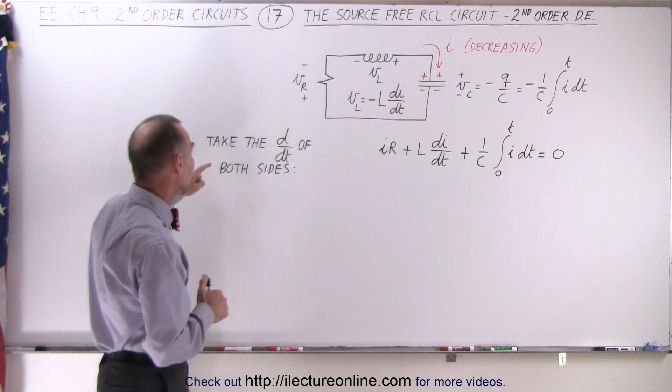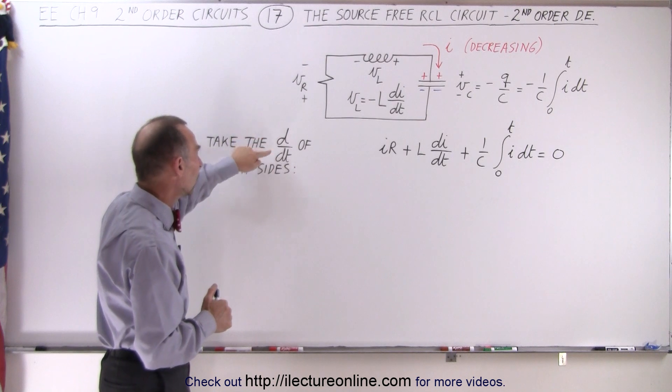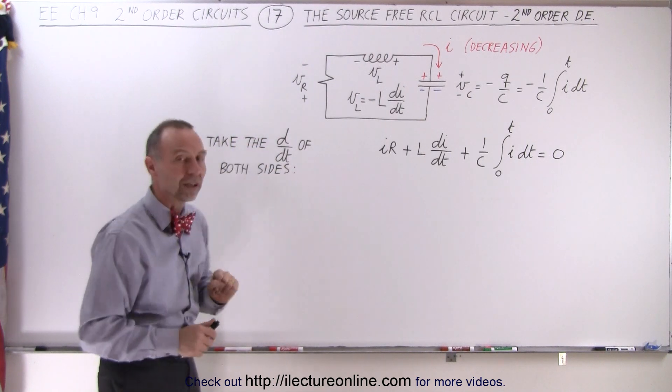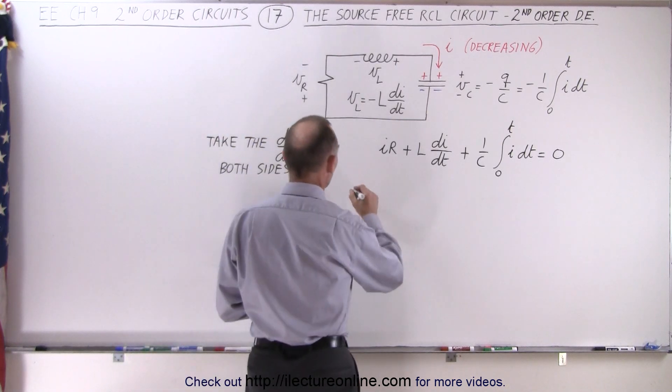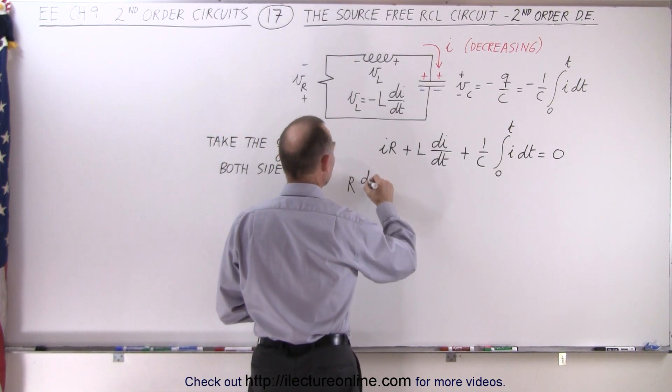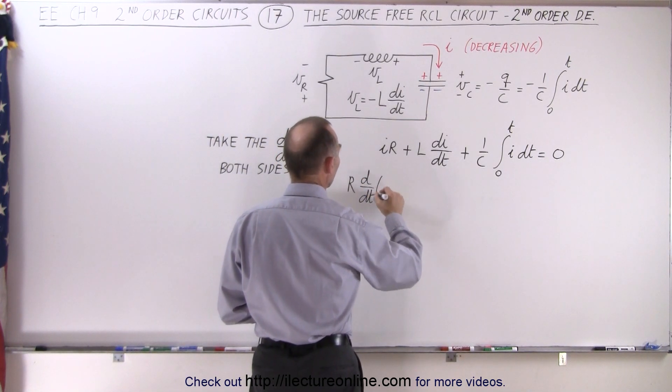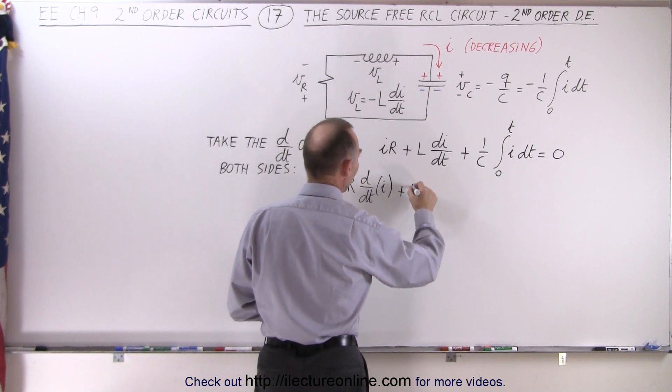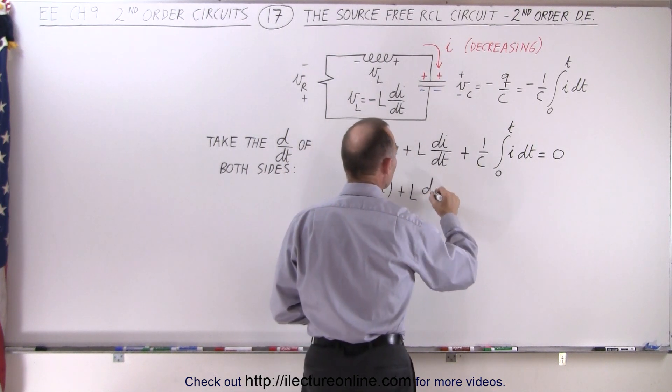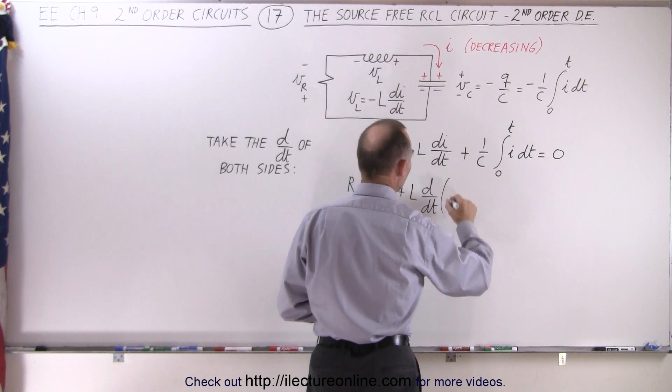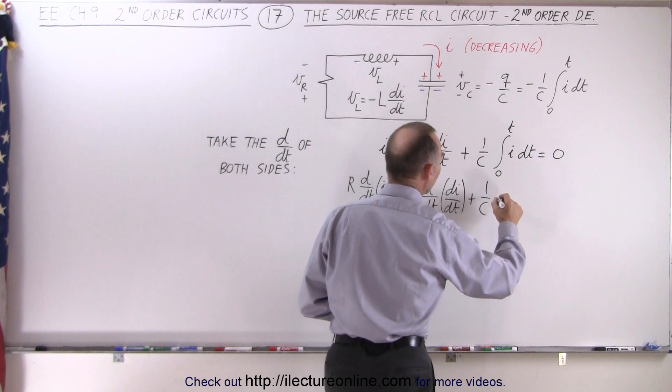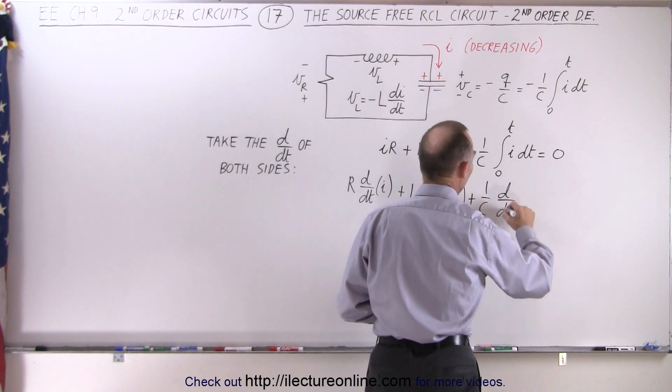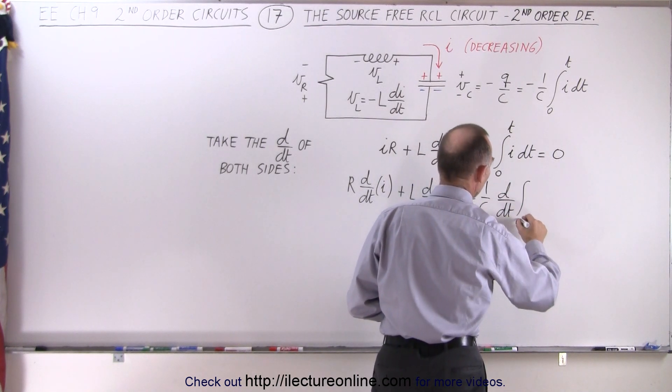We're going to take our equation and take the derivative with respect to time of both sides. When we do that, we get R times d/dt of the current, plus L times d/dt of the derivative of the current, plus 1 over C times d/dt of the integral of the current.